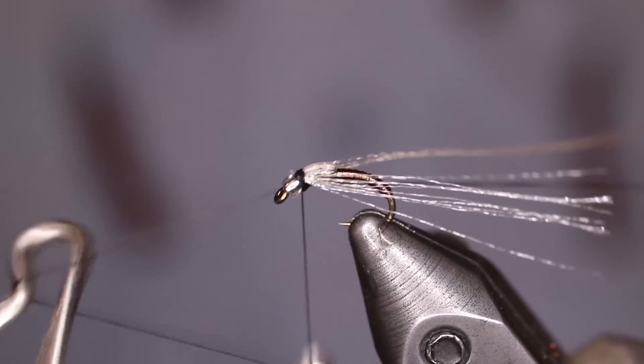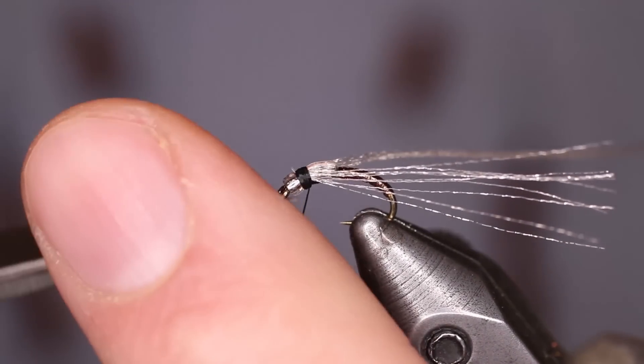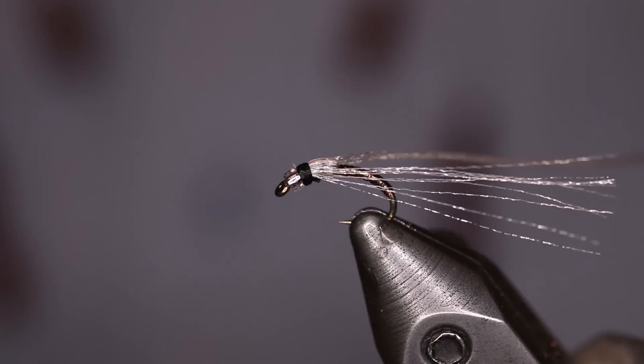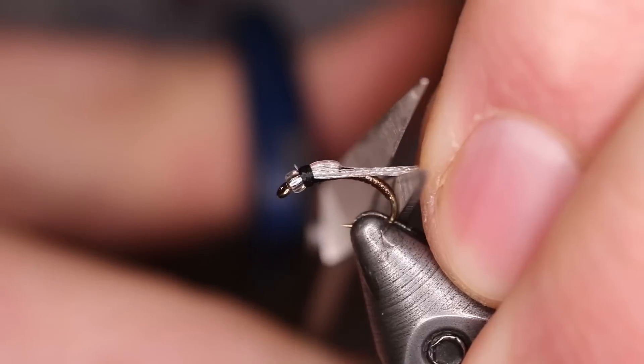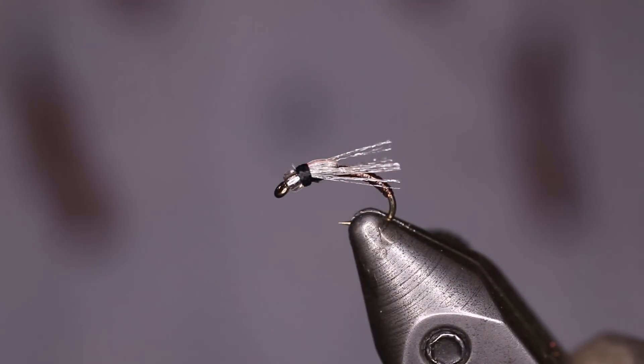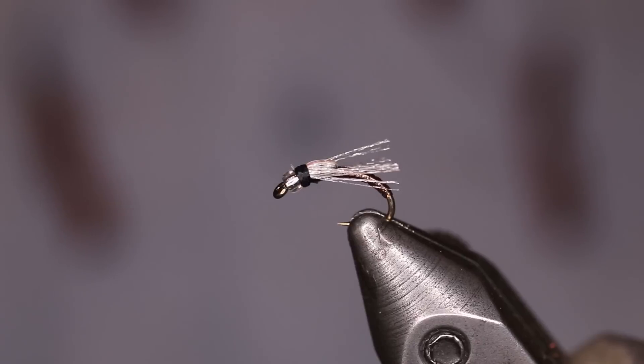Then we'll whip finish the bug and you're just about done. Trim off our thread. Final step is trimming the legs. I'll pull the legs back to the bend of the hook and come straight up. It gives them a little bit more of a pronounced look and the fish seem to really like it.